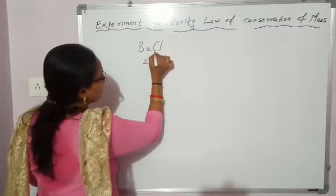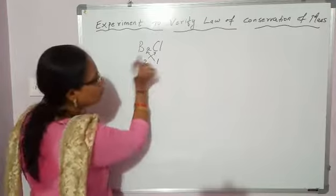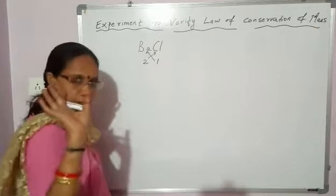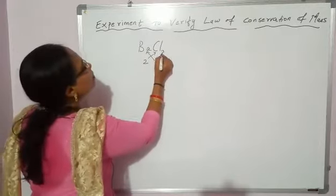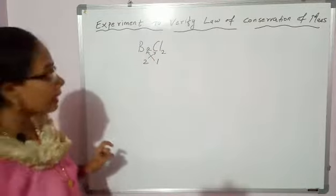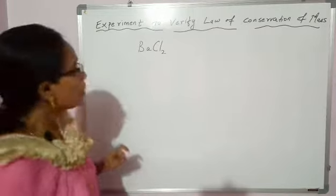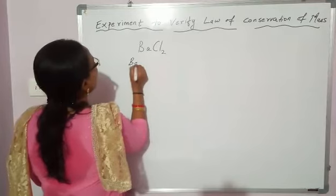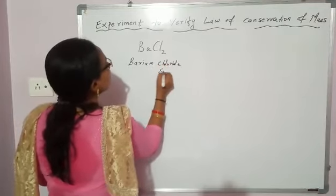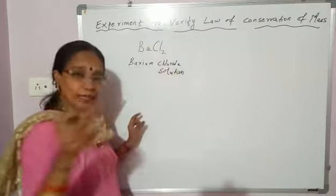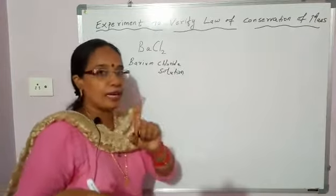You will cross-multiply the valencies. The valency 1 will go with Ba, so you do not write Ba1 — Ba means 1 barium atom. Now 2 will go with Cl, so the formula becomes BaCl₂, barium chloride. So this is barium chloride solution, meaning barium chloride dissolved in water, giving you an aqueous solution.